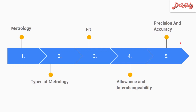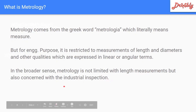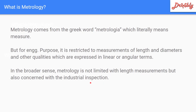First is metrology. Metrology is a Greek word meaning measure. For engineering purposes, it is often restricted to length and diameter measurement, but there are other qualities that we can express in linear or angular terms. Metrology is not limited to length measurement — it also covers industrial inspection, which includes measuring instruments and their accuracies.